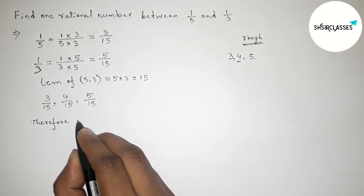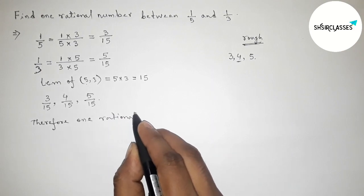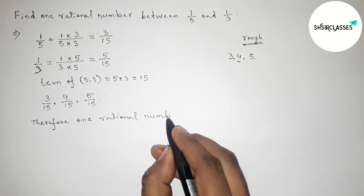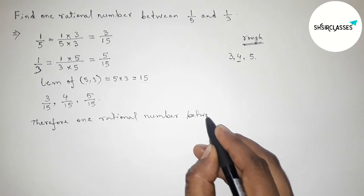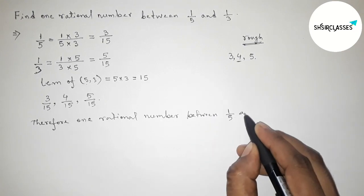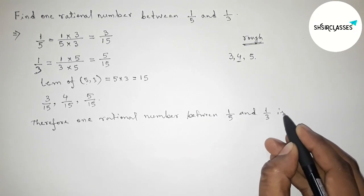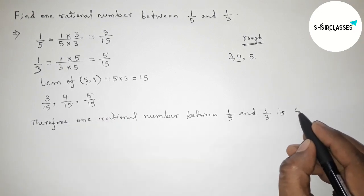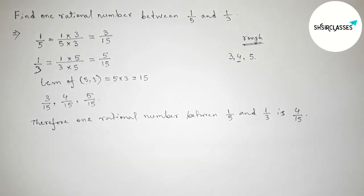Therefore the one required rational number between 1/5 and 1/3 is 4/15. So this is the process to find out one rational number between 1/5 and 1/3. That's all, thanks for watching, please share it.